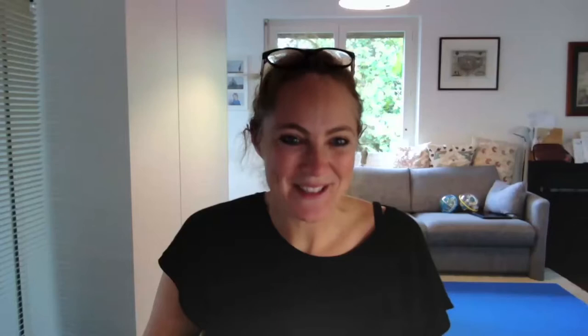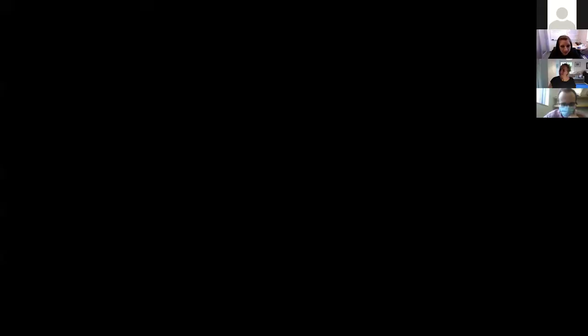Following her PhD, she completed a postdoc in Zurich with Lucas Pelkmans analyzing single cell variability and how it gives rise to pattern formation and multicellular variability. After visiting scientist positions with Hans Clevers and at Janelia, she has adopted intestinal organoid approaches and provided key insights into the principles underlying how tissues can self-organize and generate patterns. Thank you for being here — please help me welcome Dr. Liberale to Yale.